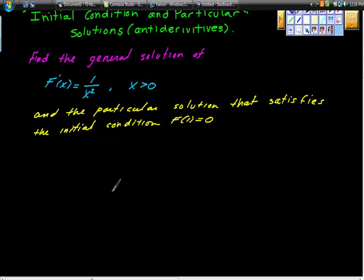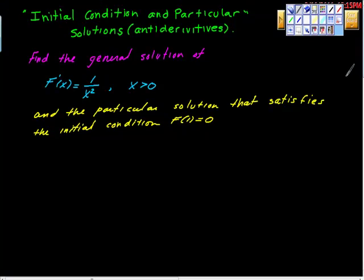We've been busy finding the antiderivative, and we've discovered that when we do that, what we end up with is a family of functions that meet that condition. Here, what we want to figure out is if we take an initial condition and we're looking for a particular solution — it gets us to a very specific equation.